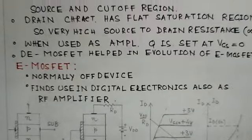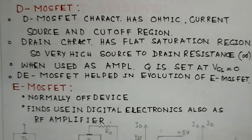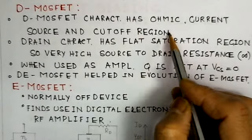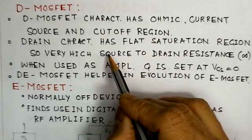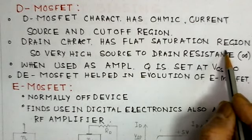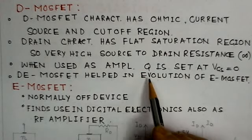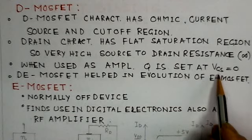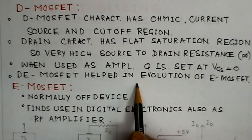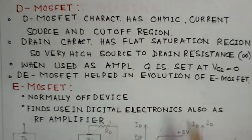The D-MOSFET characteristics include the ohmic region, current source region, and cutoff region. The drain characteristics show a very flat region, meaning very high drain-to-source resistance, nearly infinite. When used as an amplifier, the Q-point is set at VGS equal to zero for depletion MOSFETs. Although D-MOSFETs' effective use by itself is very limited, they were helpful in the evolution of E-MOSFETs.